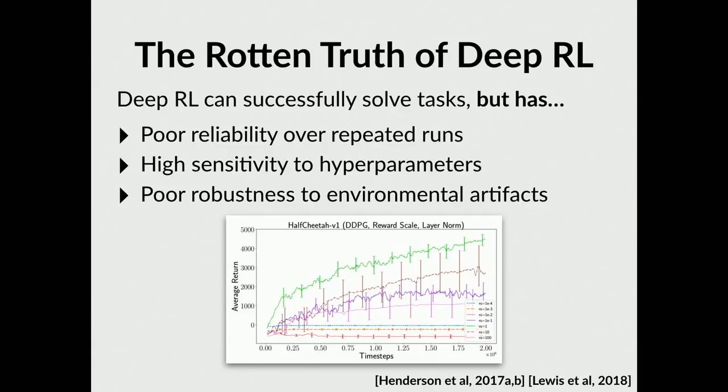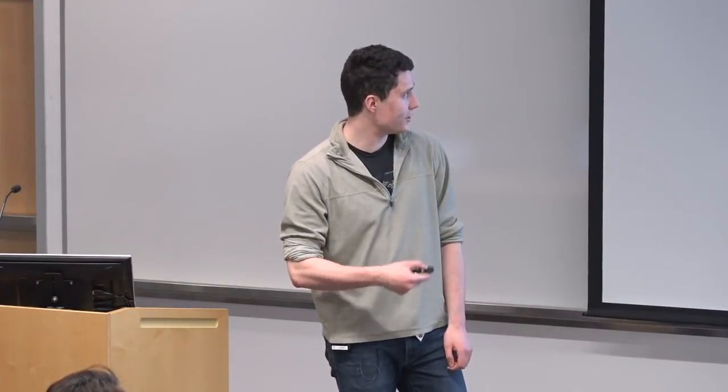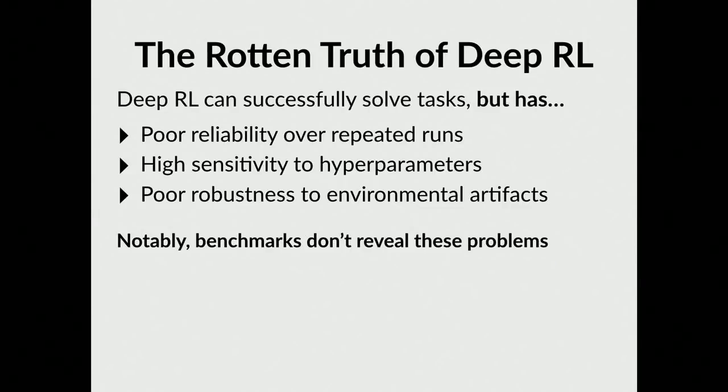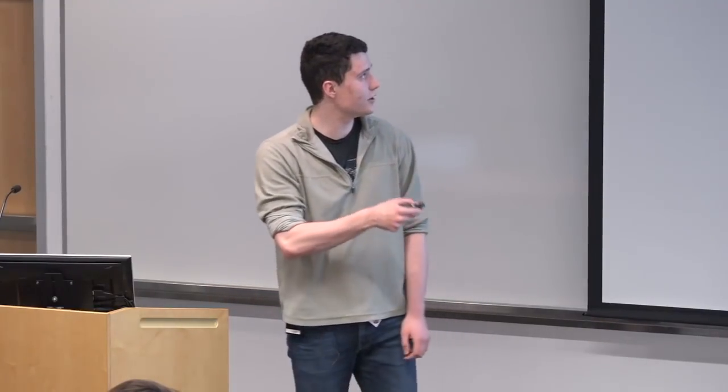The final issue is poor robustness to environmental artifacts. For example, if you take the same game and scale the rewards by a constant factor, each different constant factor should yield the same ultimate reward, but because of the reward scaling, they do significantly worse. Notably, the benchmarks everyone looks at — getting the highest expected reward at the very end — reveal none of these problems.